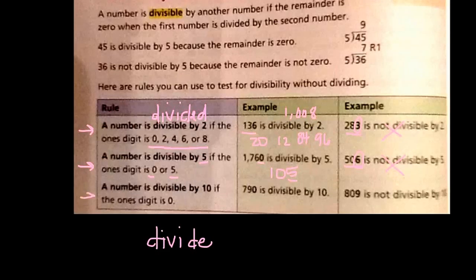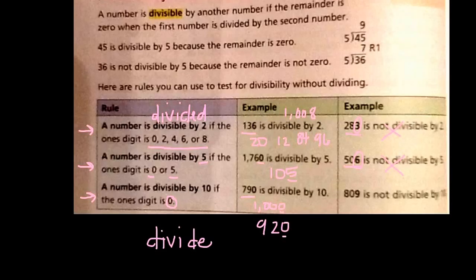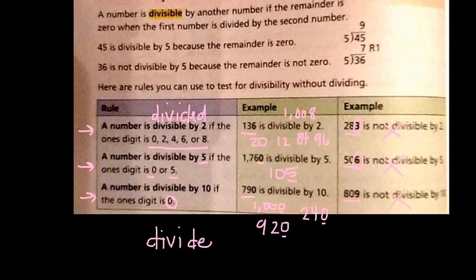Last rule is divisible by 10, or being able to be divided by 10, it has to end in a 0. So, 790 is divisible by 10, just like 1,000 would be, because it ends in a 0. Just like 920 would be, because it ends in a 0. Just like 240 would be, because it ends in a 0. 809, however, is not divisible by 10, because it ends in a 9. Remember, it has to end in a 0 for it to be divisible, or divided by 10.